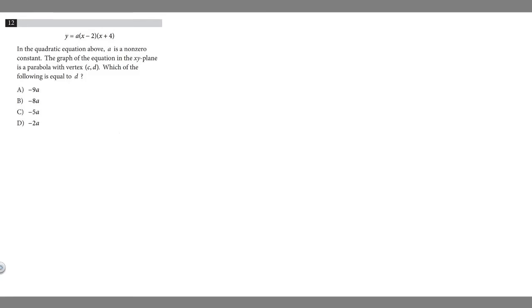In this problem we're told that in the quadratic equation above, a is a non-zero constant. The graph of the equation in the xy-plane is a parabola with vertex (c,d). Which of the following is equivalent to d?